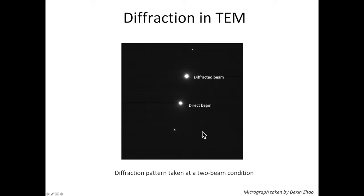One is the transmitted beam or the direct beam. The other is the strongly diffracted beam. What this tells us is only this set of planes are strongly diffracting. So only this set of planes undergo Bragg's diffraction.